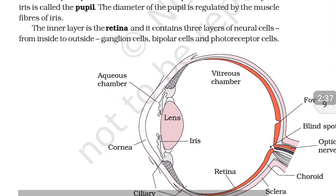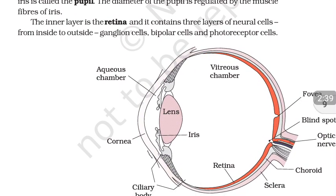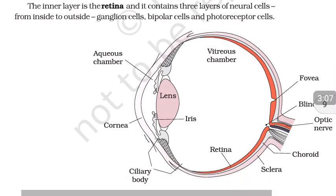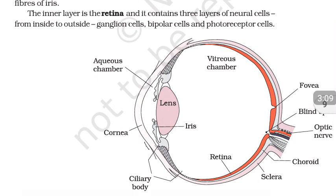In this diagram you can see the crystalline lens, and just in front of it there is an aperture between the two parts of the iris called the pupil. Just in front of the pupil is a space called the aqueous chamber, filled by a fluid called aqueous humor. In front of it is the outermost layer of the eyeball called the cornea.